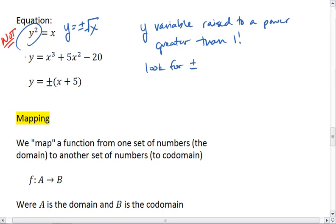In our next one, we have y to the first power equals x cubed plus 5x squared minus 20. This is a function.